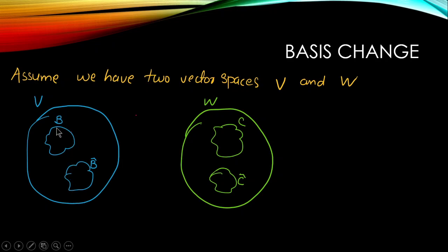Using basis vectors we can represent all other vectors in the vector space. So using the vectors inside B, I can represent all the vectors in V. Similarly, in B̂ we have a set of basis vectors and using those vectors I can represent all the vectors in V.